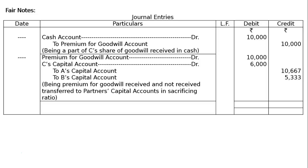Total both columns separately and the totaling is rupees 26,000 each column. Thank you.